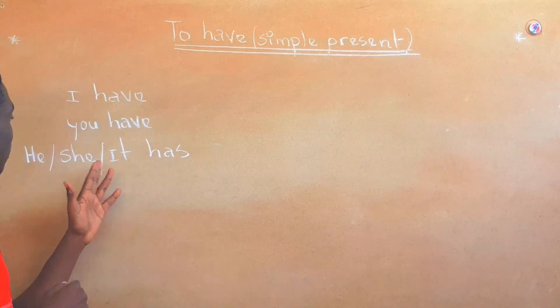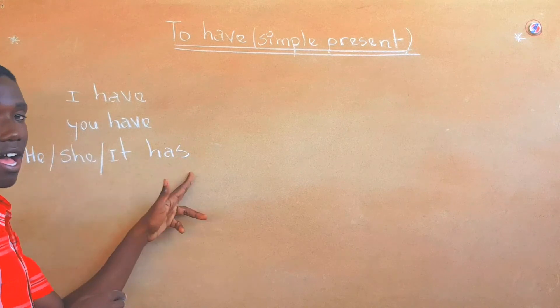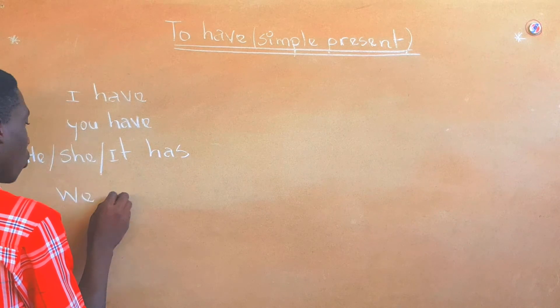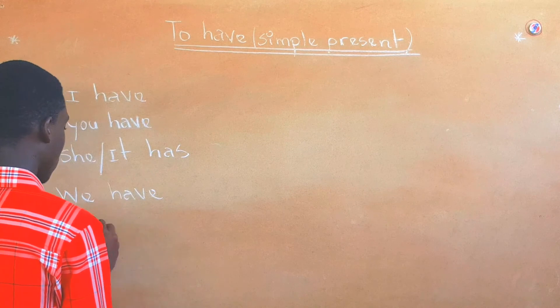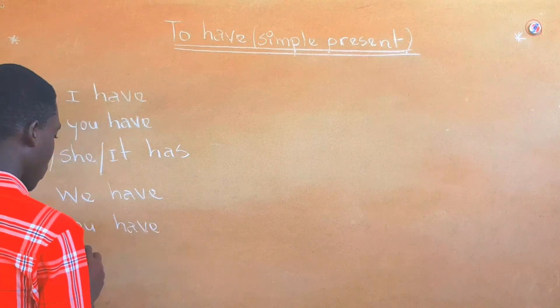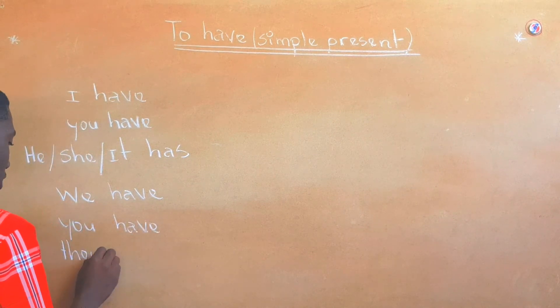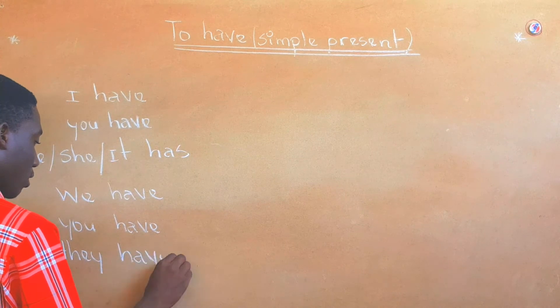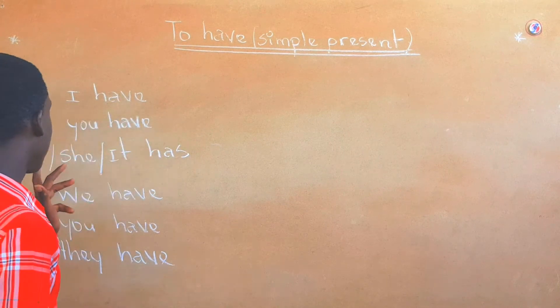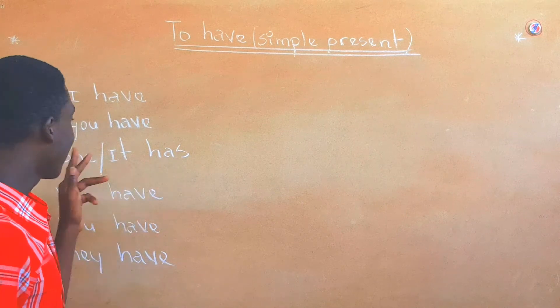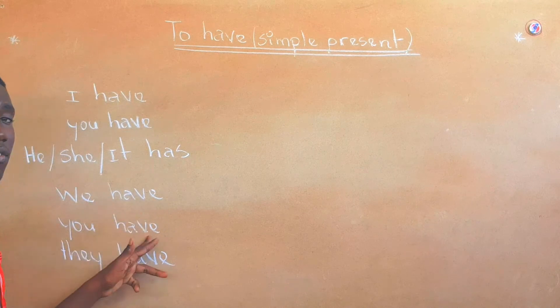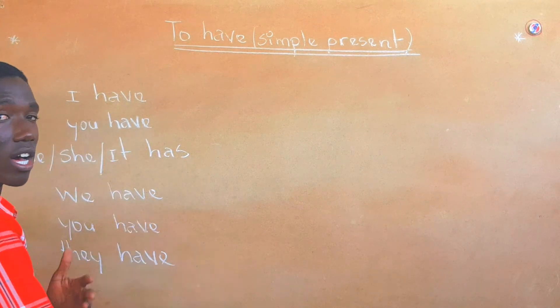We have, you have, and they have. I have, you have, he has, she has, it has, we have, you have, and they have. This is the affirmative form.